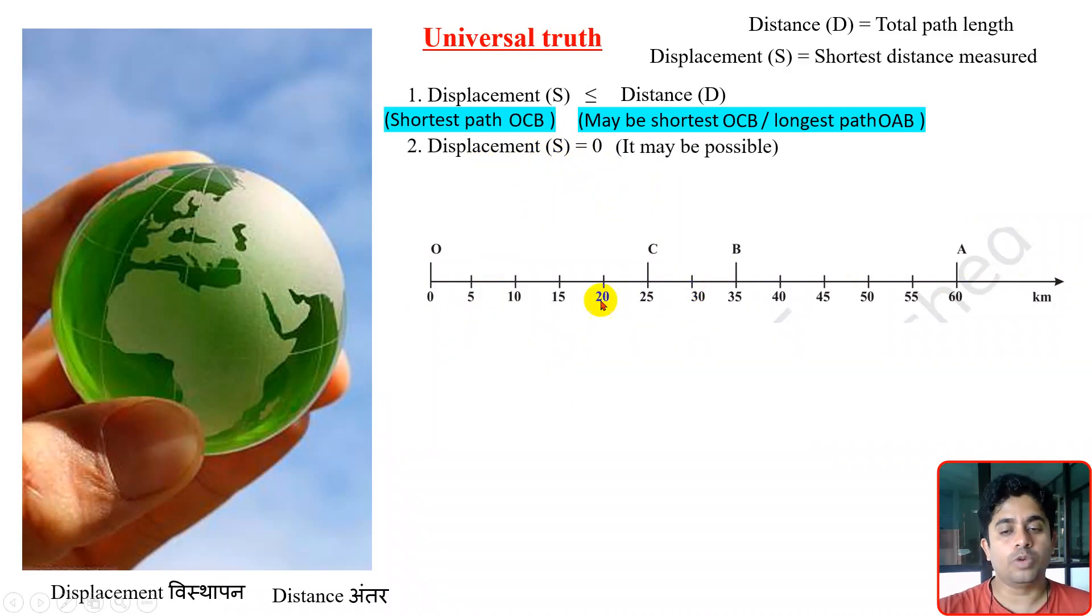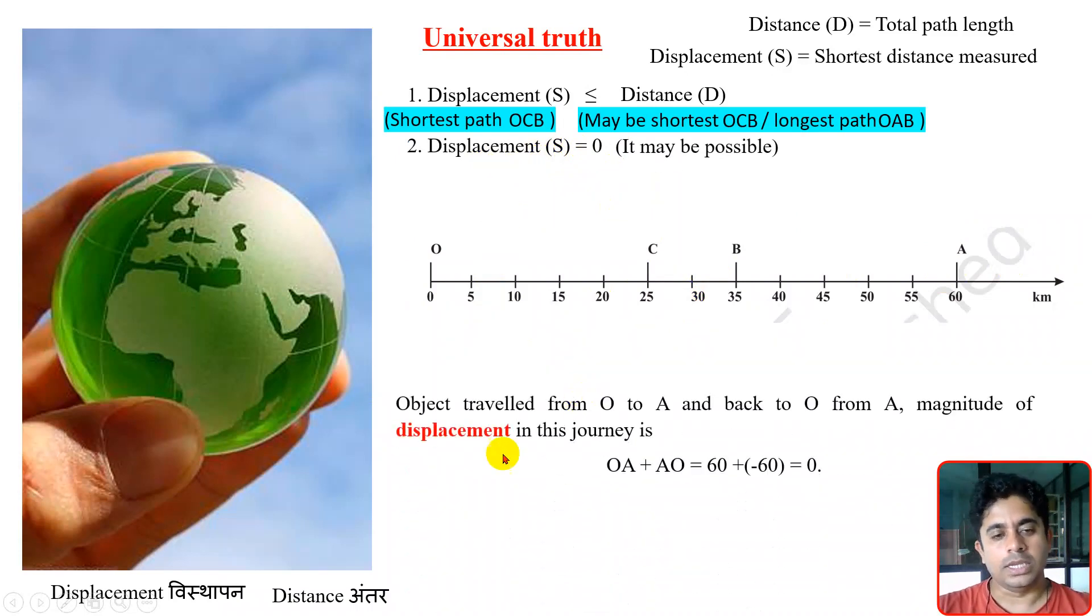Yes, it may be possible. See, we will consider one journey: an object has traveled from O to A and back to O. What is the magnitude of displacement for this journey?